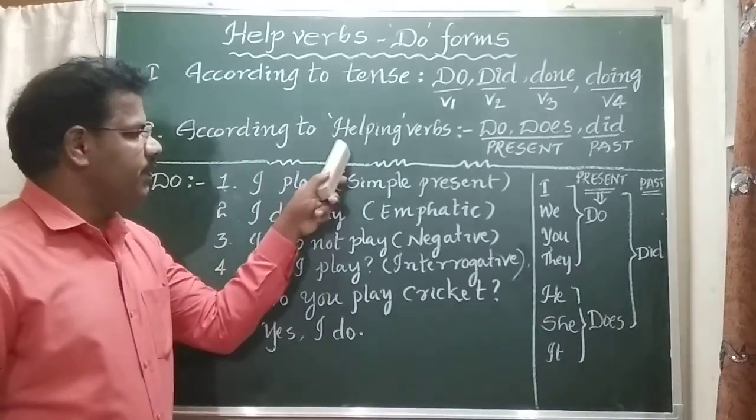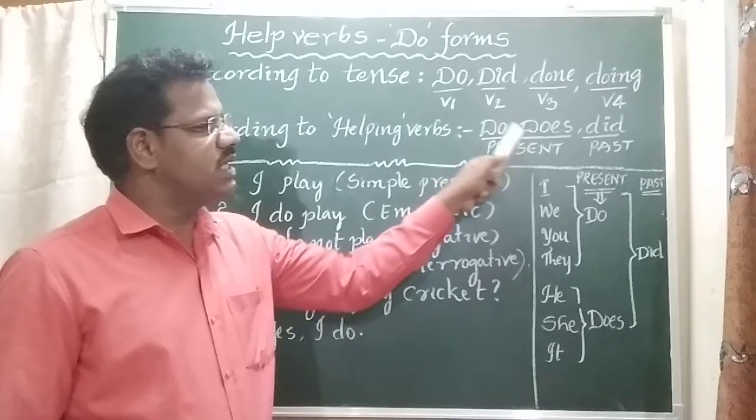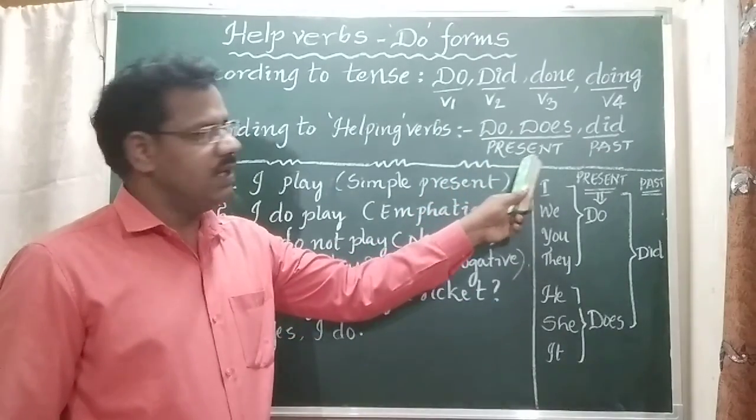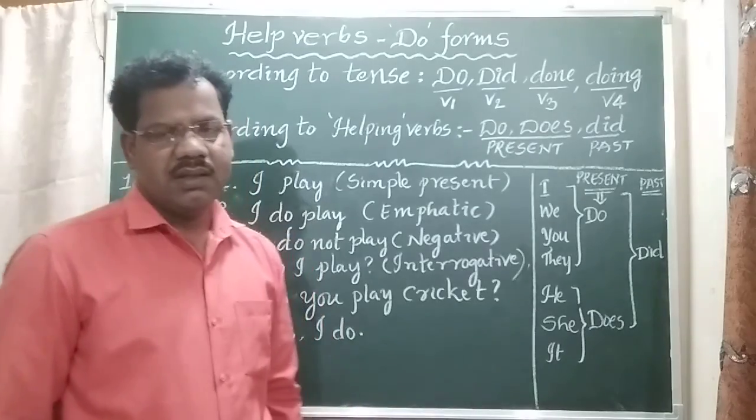According to helping verbs, Do Forms are Do, Does, Did. Do and Does represent present meaning. Did represents past meaning.